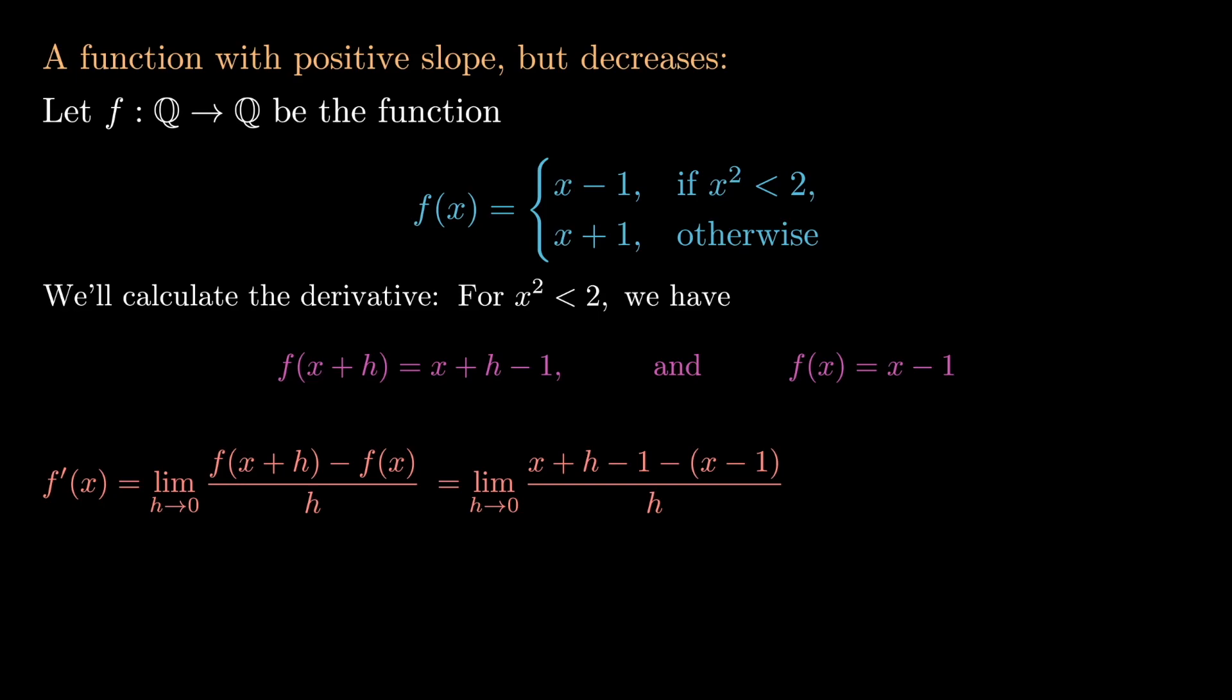Now if we simplify this expression, the x's will cancel and so will the minus ones, so all we're left with is the limit as h tends towards 0 of 1 over 1, but this is just 1. In particular, the derivative is positive since 1 is greater than 0.